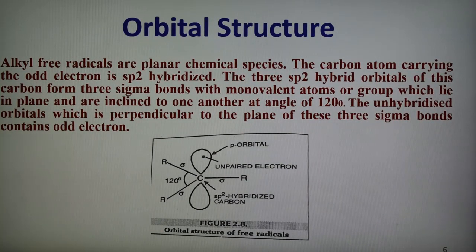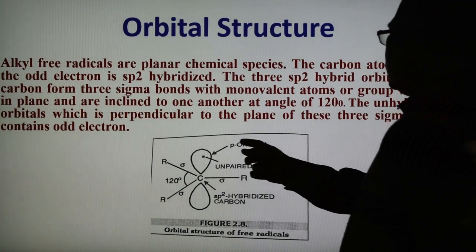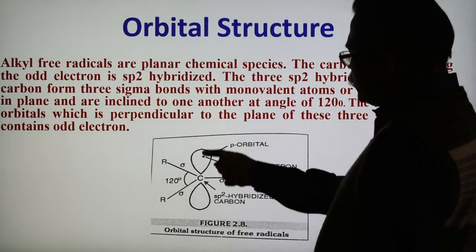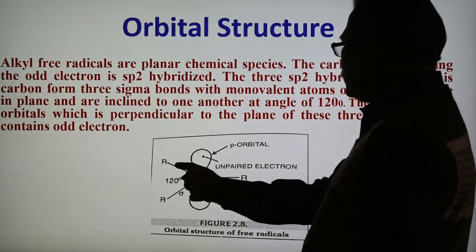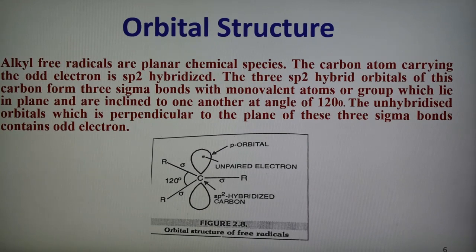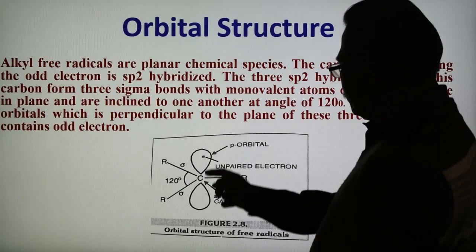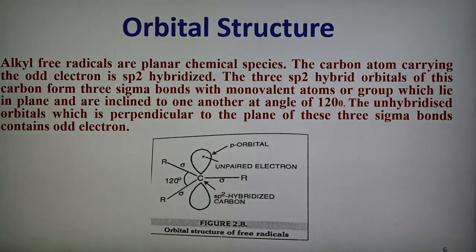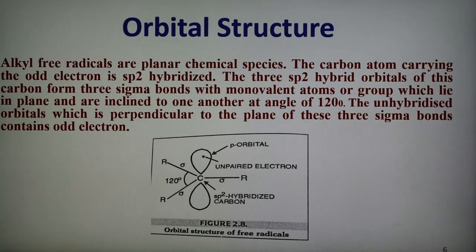The unhybridized orbital, which is perpendicular to the plane, contains the odd electron. This is the odd electron in the unhybridized orbital. One, two, three alkyl groups form sigma bonds with a trigonal planar geometry and bond angle of 120 degrees. There is one unhybridized p orbital having the odd electron. So this is the orbital picture in case of free radical — a compound having trigonal planar shape in which the carbon is sp2 hybridized, and the odd electron is in the unhybridized p orbital.